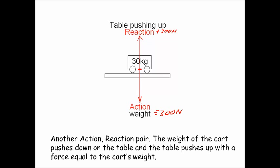This is a good example of an action-reaction pair. The weight of the cart pushes down on the table, and the table pushes up with a force equal to the cart's weight. You set something down on a table — it's not going to accelerate upward or downward; it stays stationary, in equilibrium. The action force is the weight acting downward, and the reaction force is the table pushing up with a force exactly equal to the object's weight. That's why it doesn't accelerate — the net force is equal to zero.